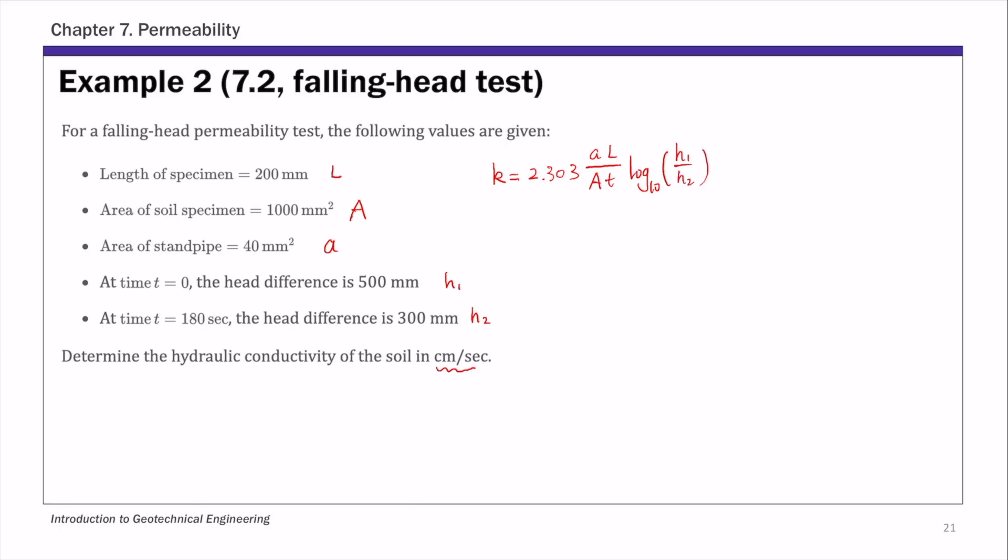And if you substitute all these given values into the expression for K, you end up with 2.27 times 10 to the negative 2 millimeter per second.